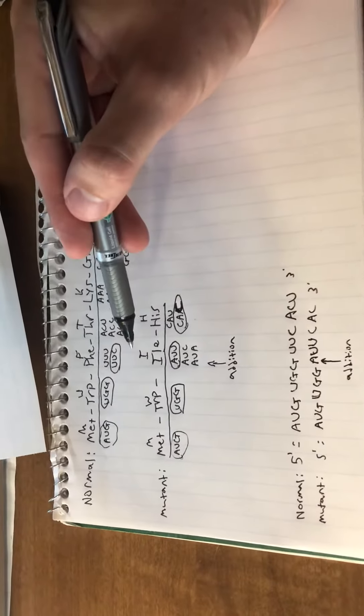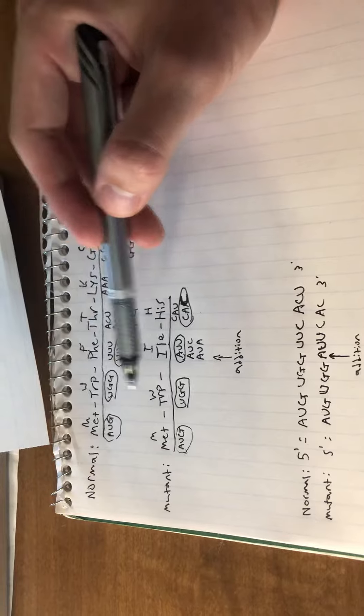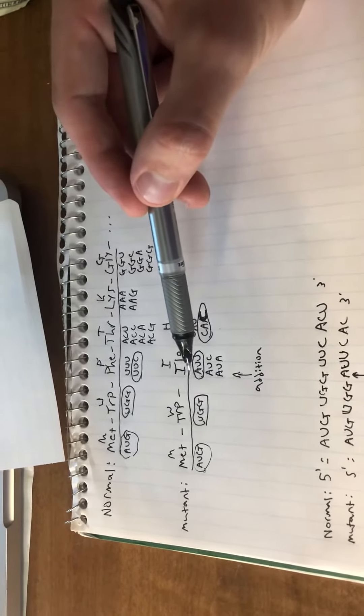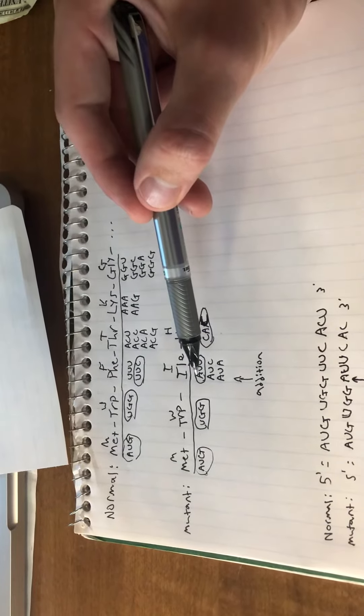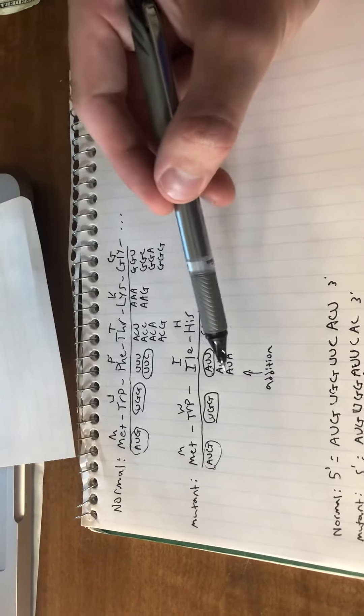As you can see here, for the first two amino acids there's no difference between the normal and the mutant protein. What has happened though is an adenine has been added into the coding sequence.